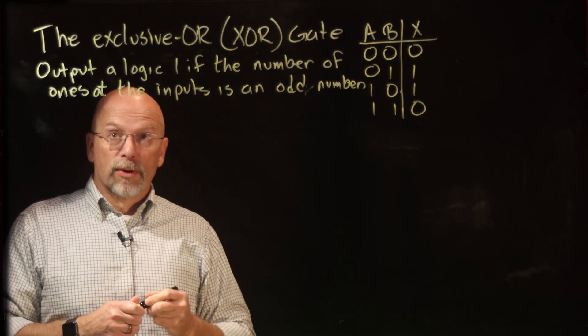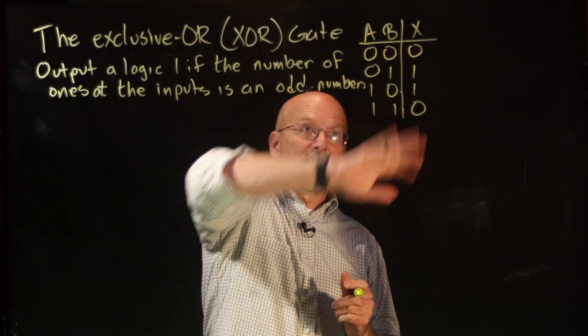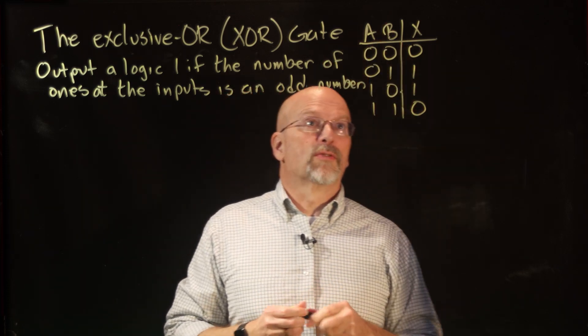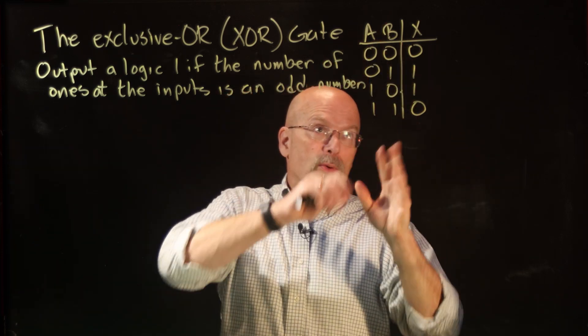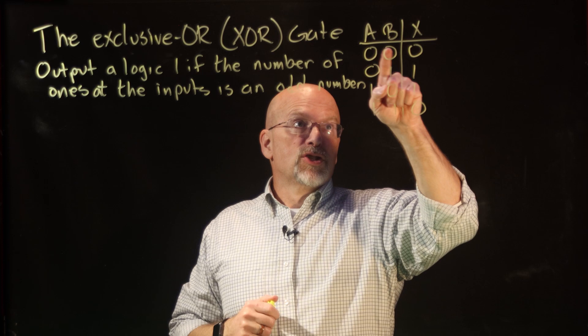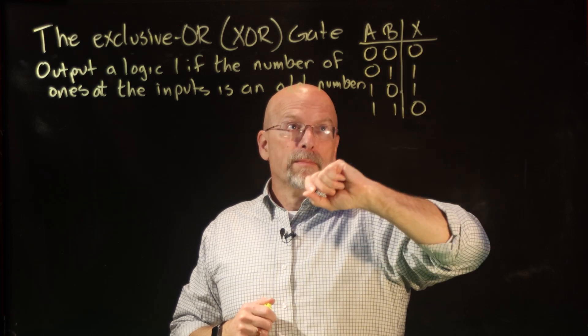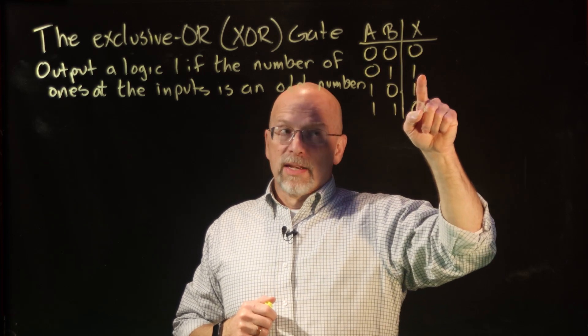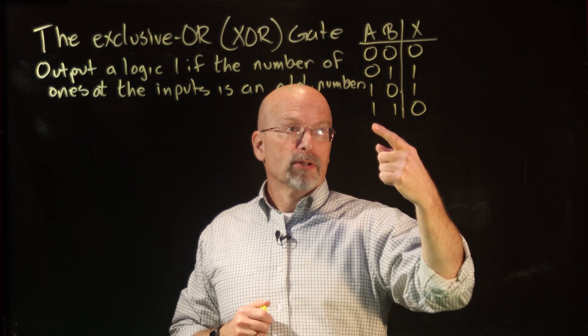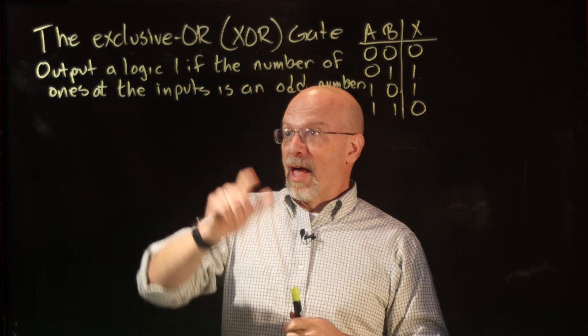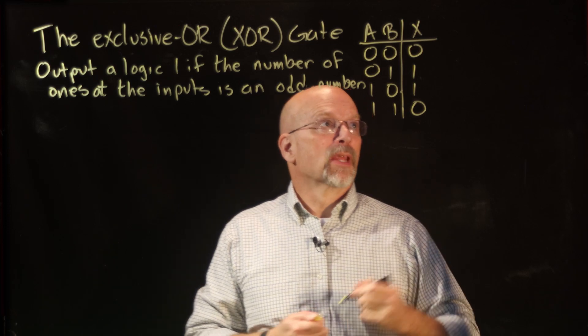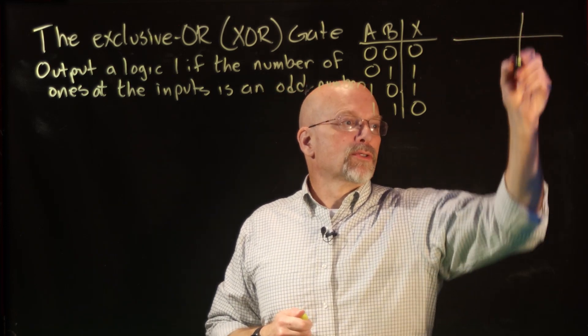Otherwise output a 0. Let's take a look at this little two-input exclusive-OR the way it is. I have zero 1s, that's an even number. One 1, that's an odd number. One 1, that's an odd number. Two 1s, that's an even number. That matches this definition, doesn't it?